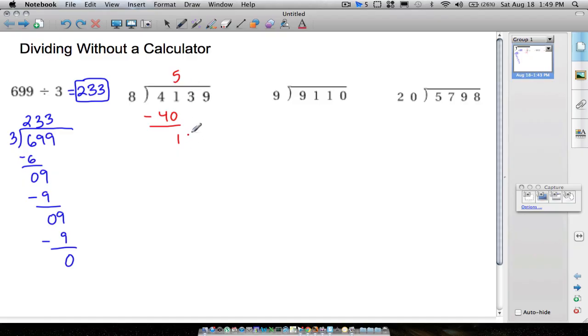Bring down your 3. 8 goes into 13 one time. We take 1 times 8, we get 8. Subtracting, we have 5. And now we take, obviously, we've got to bring down our 9. And now figure out how many times 8 goes into 59. It goes into 59 seven times. 8 times 7 is 56. Subtract, and we have 3.